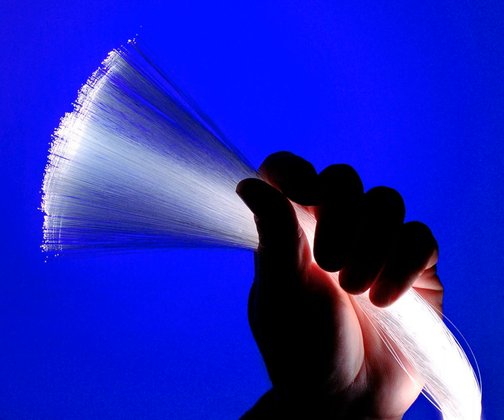Glass optical fibers are almost always made from silica, but some other materials, such as fluorosiconate, fluoroluminate, and chalcogenide glasses as well as crystalline materials like sapphire, are used for longer wavelength infrared or other specialized applications. Silica and fluoride glasses usually have refractive indices of about 1.5, but some materials such as the chalcogenides can have indices as high as 3. Typically the index difference between core and cladding is less than 1%.